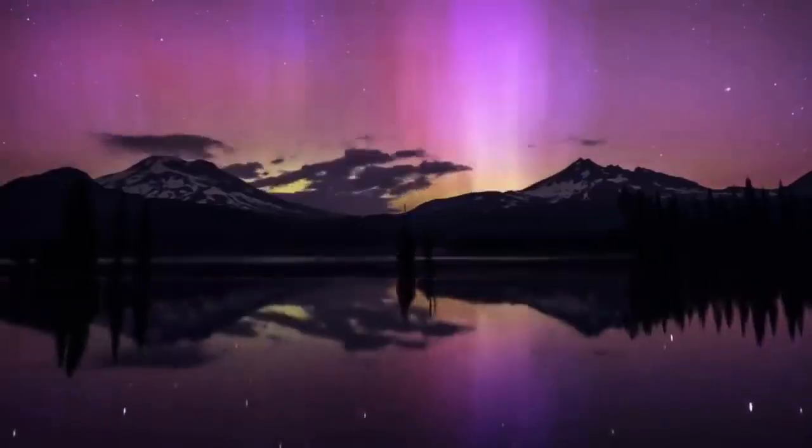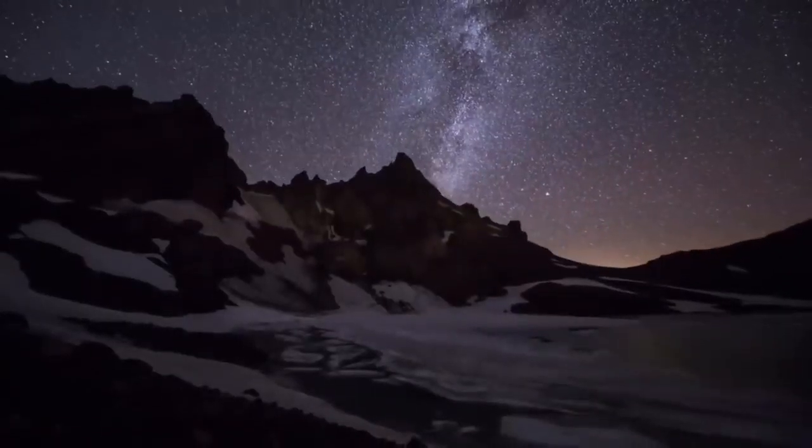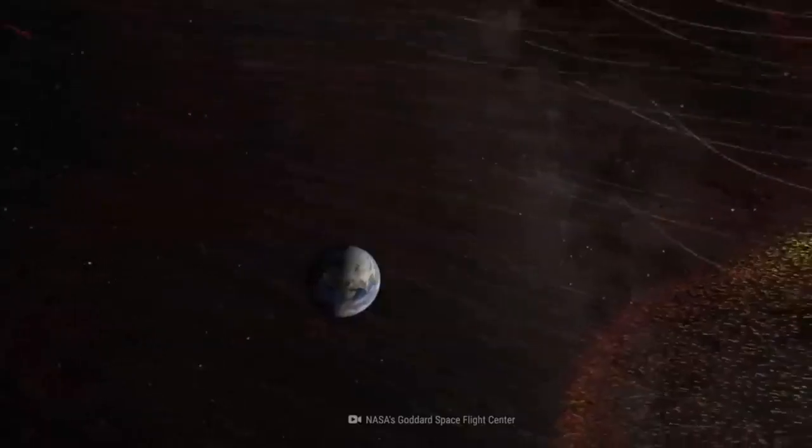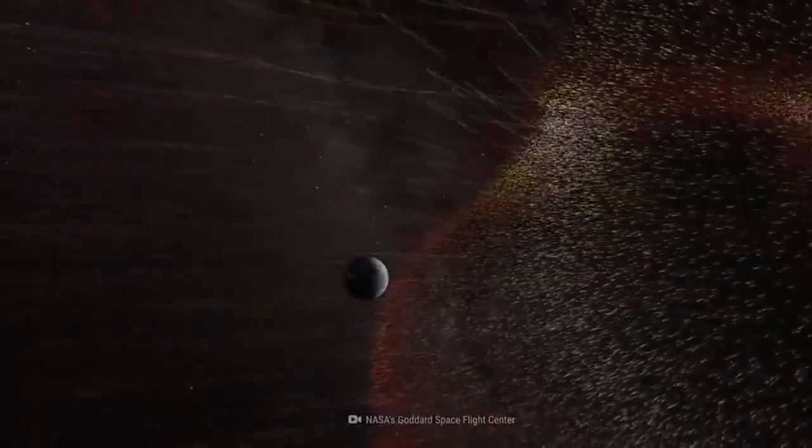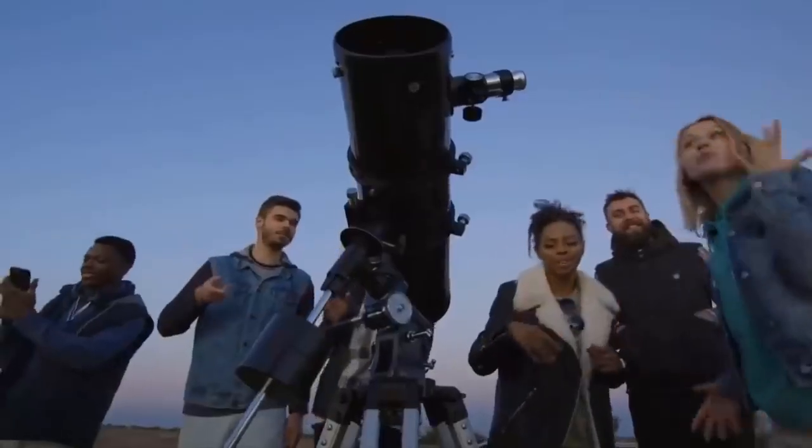The earth spins on an axis, and takes 24 hours for it to do a complete rotation. As it spins, it also revolves around the sun and a full revolution takes 365 days, or a full year.